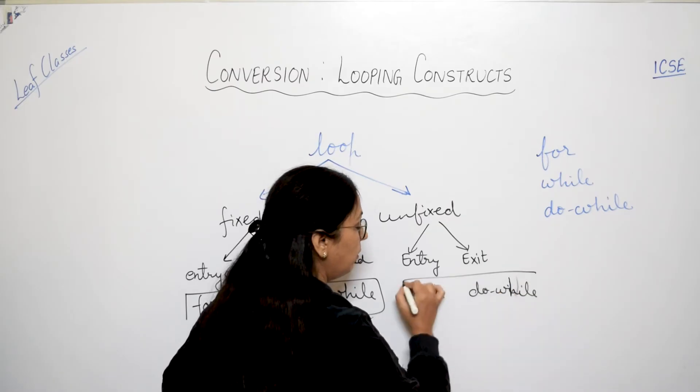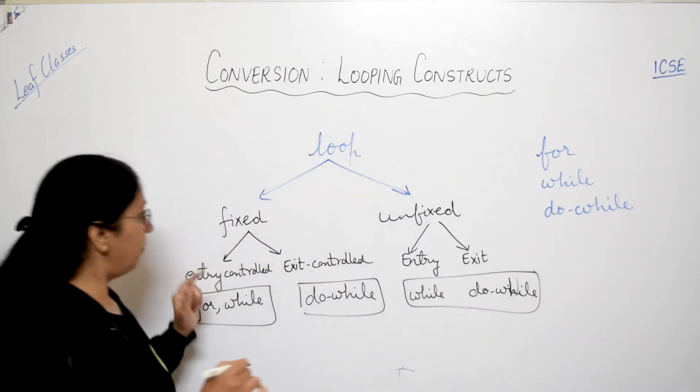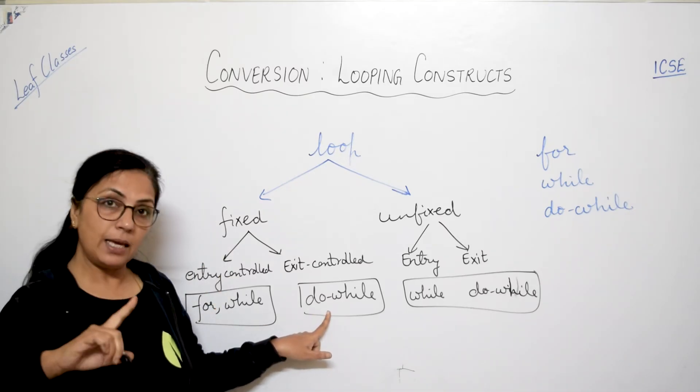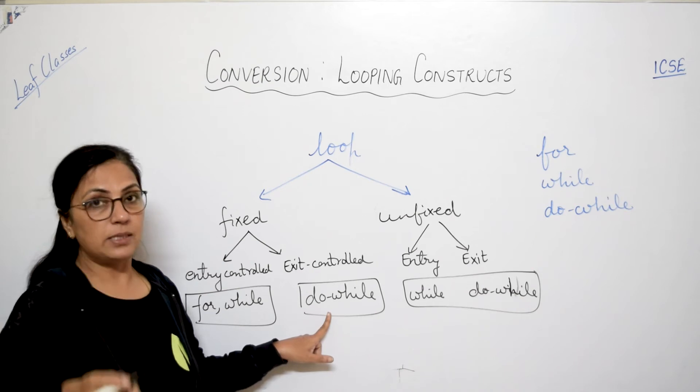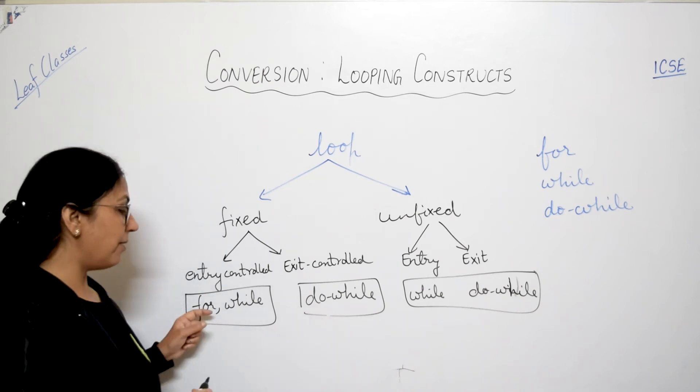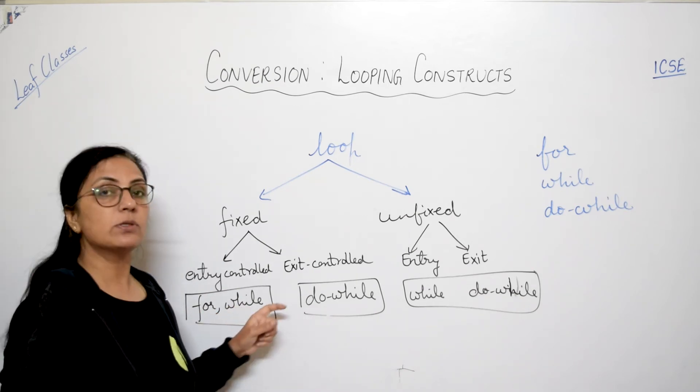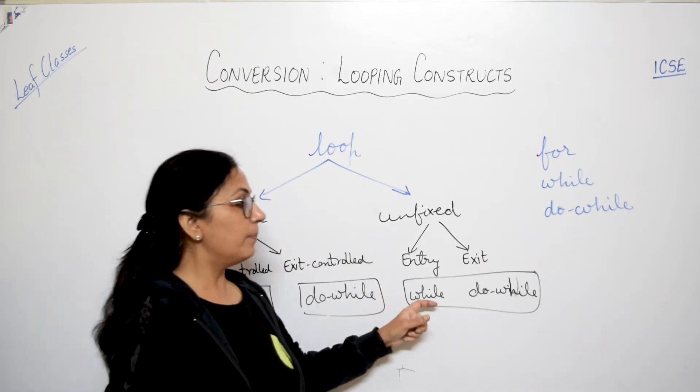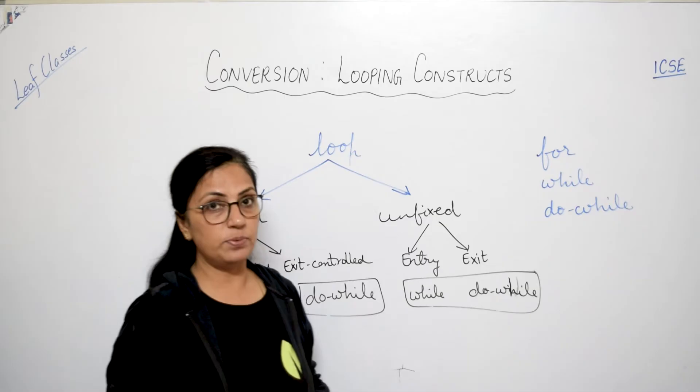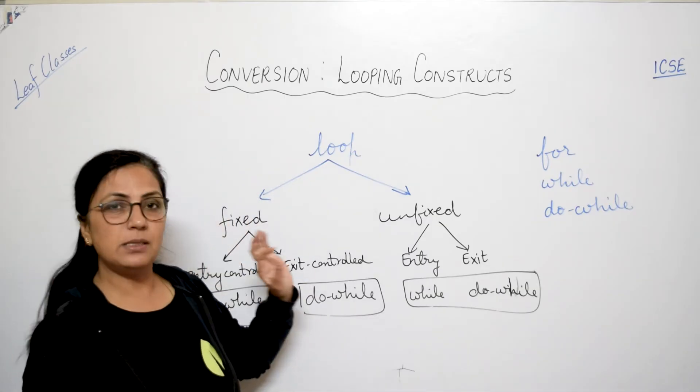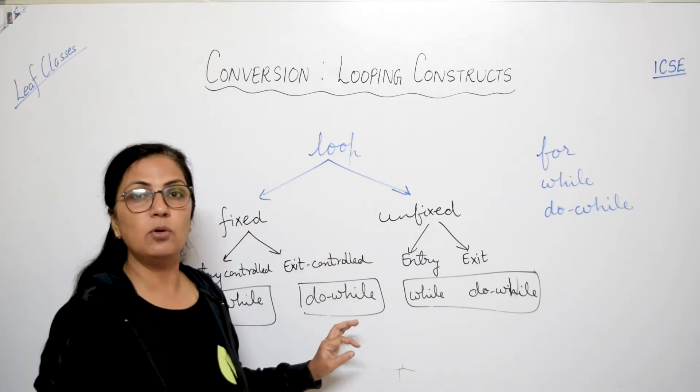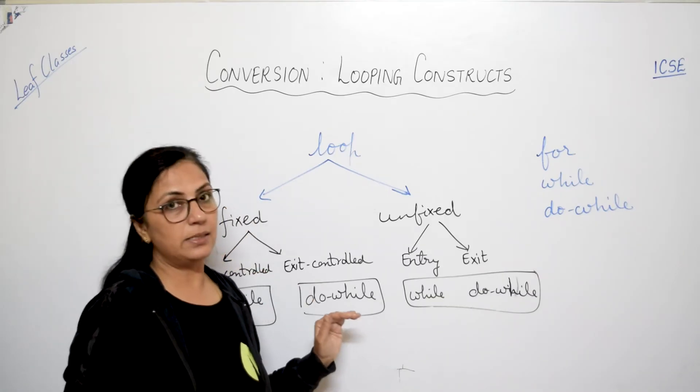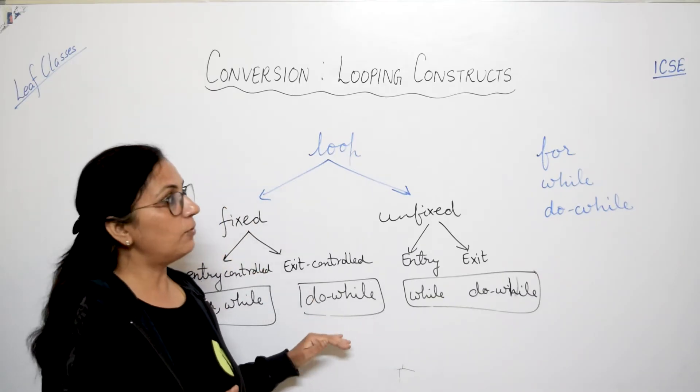Fixed mein entry control mein a jaega aapka for loop or while loop, and exit control mein a jaega do while loop. Now here in unfixed we have while loop and exit control we have do while loop. If you see here I have written for fixed for, while, do while. Iska matlab jab humko pata hai ki kitni baar humko ye statements execute karne hai, us case mein hum for bhi use kar sakte hain, while bhi use kar sakte hain, do while bhi use kar sakte hain. But for unfixed, kewan hum while and do while loops use kar sakte hain. So children, this is just the introduction to the loops, how many types of loops are there, because these type of questions are asked in section A.